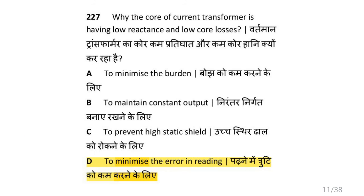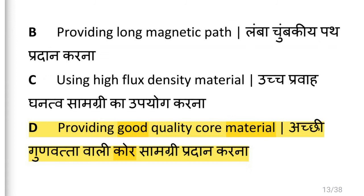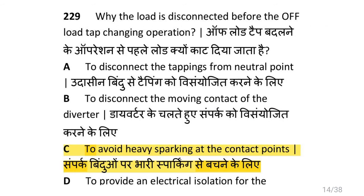Why is the core of a current transformer having low reactance and low core losses? That is to minimize the error in reading. How can the error in reading of a potential transformer be reduced? By providing good quality of core material. Why is the load disconnected before the off-load tap changing operation?